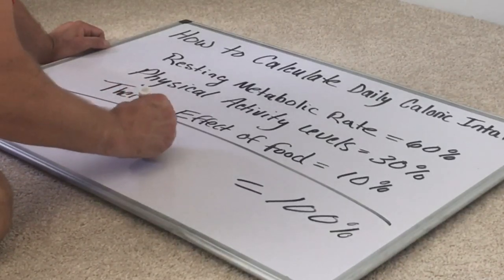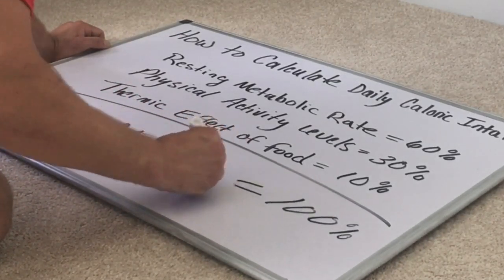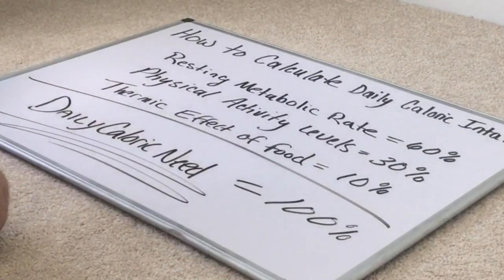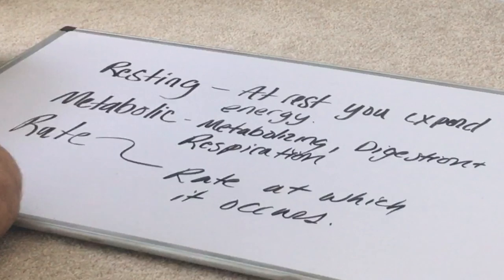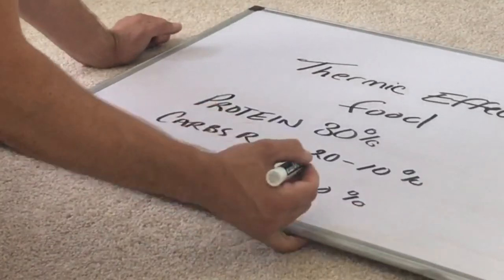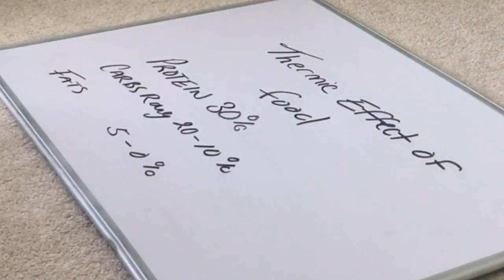Your daily caloric intake depends on your resting metabolic rate, your physical activity level, and the thermic effect of food. Your resting metabolic rate is the rate of calories you burn at rest during digestion, respiration, and blood pumping. Physical activity is the amount of work or exercise you do per day, and the thermic effect of food is mainly driven by the amount of protein and carbs that you eat.